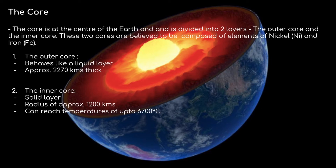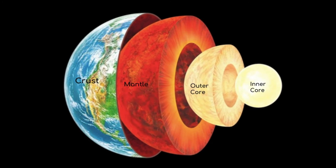The core is at the center of the Earth and is divided into two layers: the outer core and the inner core. Both are believed to be composed of nickel and iron. The outer core behaves like a liquid layer and is approximately 2,270 kilometers thick. The inner core behaves like a solid layer with a radius of approximately 1,200 kilometers. It can reach temperatures of up to 6,700 degrees Celsius — which is actually comparable to the surface of the sun.